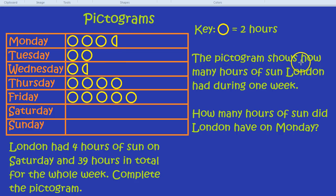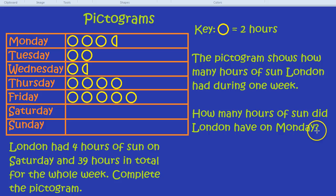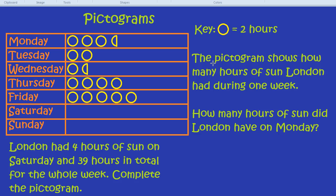The pictogram shows how many hours of sun London had during one week. How many hours of sun did London have on Monday? Now the most important thing about a pictogram — you could even say the key thing about a pictogram — is the key. And in this question they give us the key, which is that one circle equals two hours of sunshine.